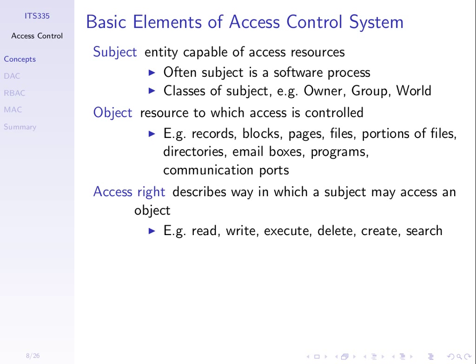Objects are the resources we want to control access to. These include disk records, blocks on a disk, pages of memory, files, portions of files, directories, email boxes, software, and communication capabilities of a computer system. We will commonly use files as an example — think of your computer with a set of files and directories, and you want to control who can access those files.